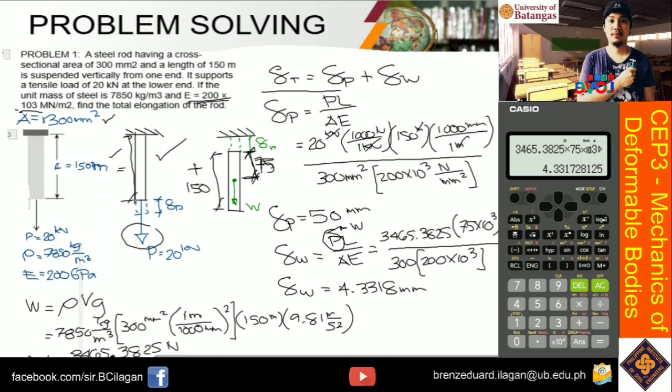By applying this equation, we can solve for the total deformation. That's just the sum of delta P plus delta W, or 50 plus 4.3318 equals 54.3318 millimeters. This is our final answer. Let's proceed to the next problem.